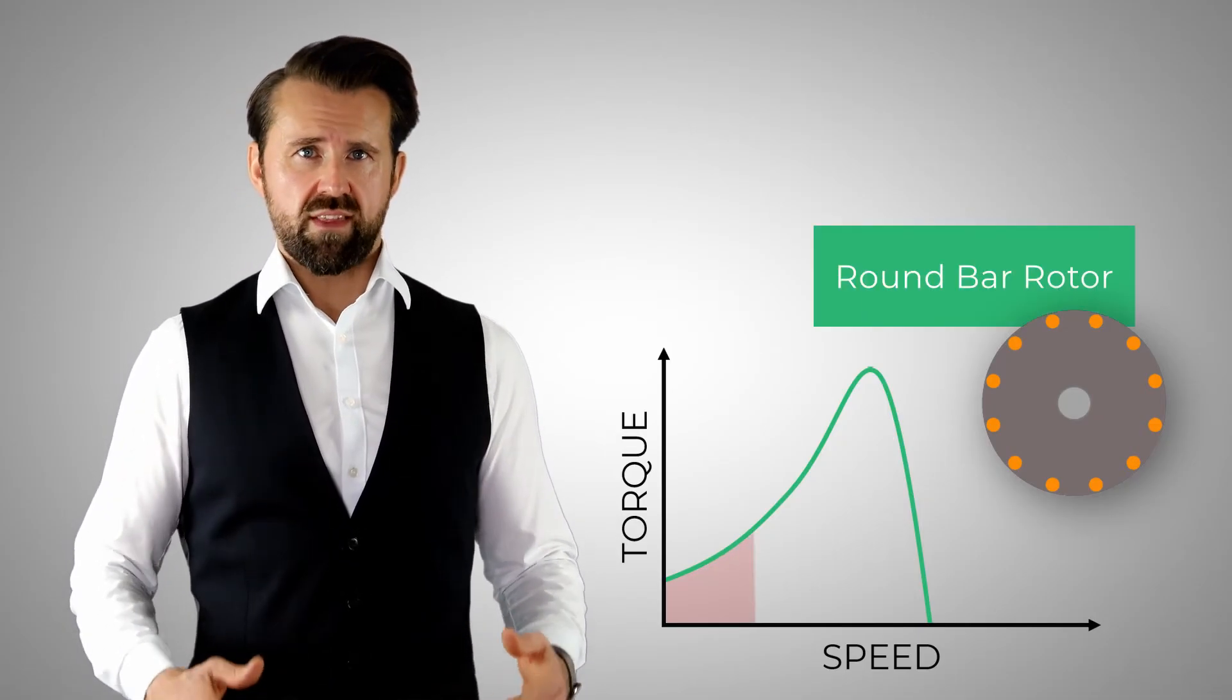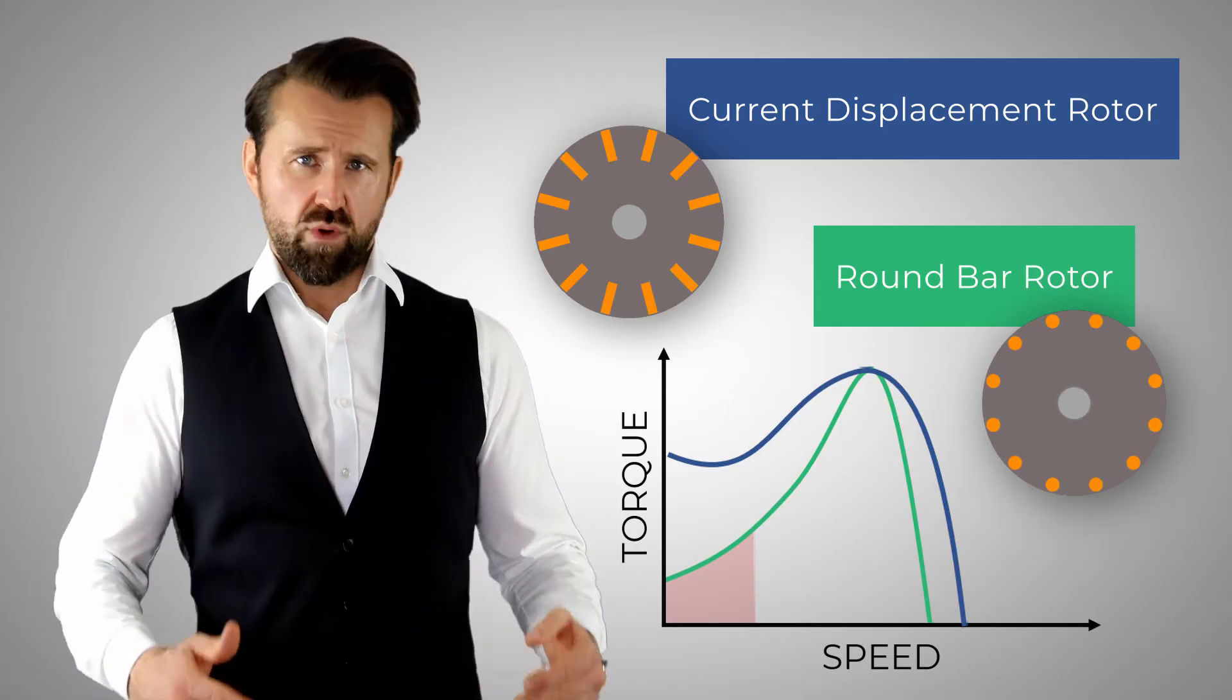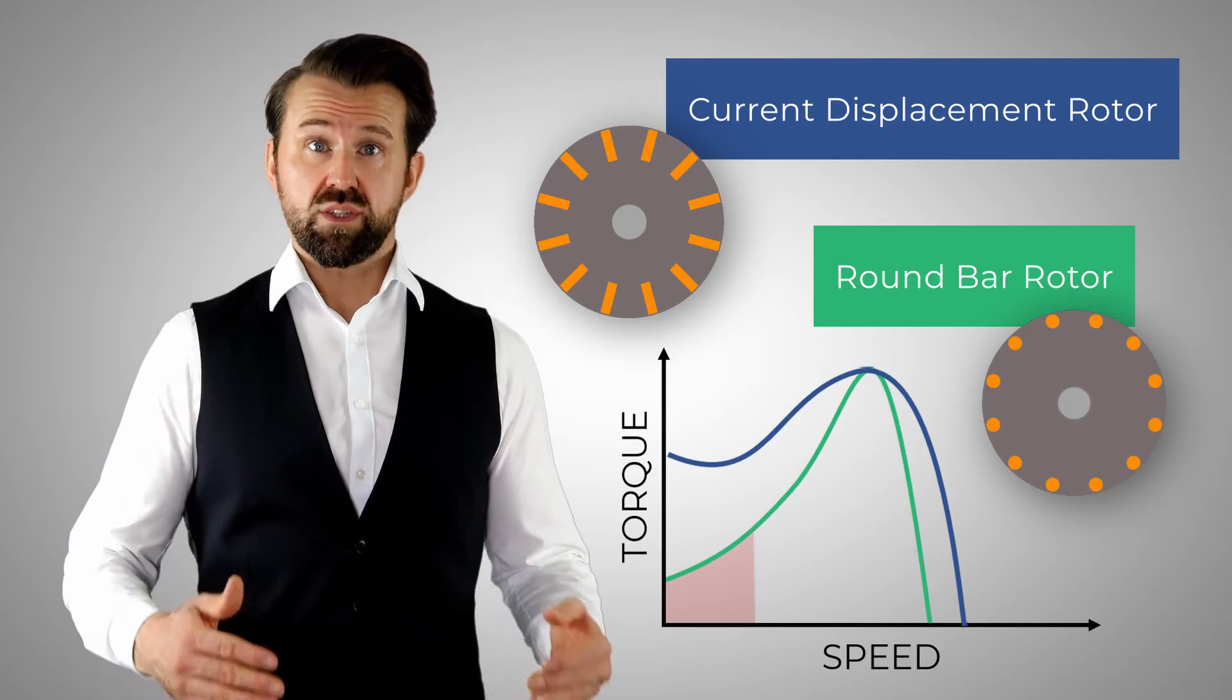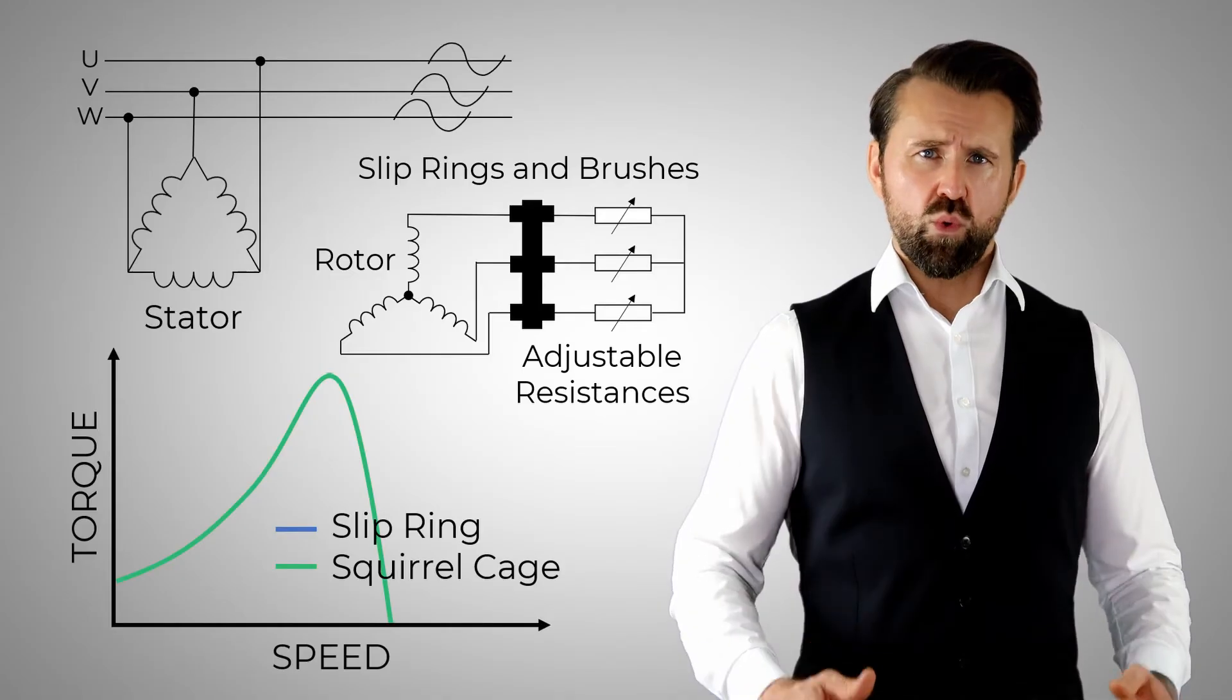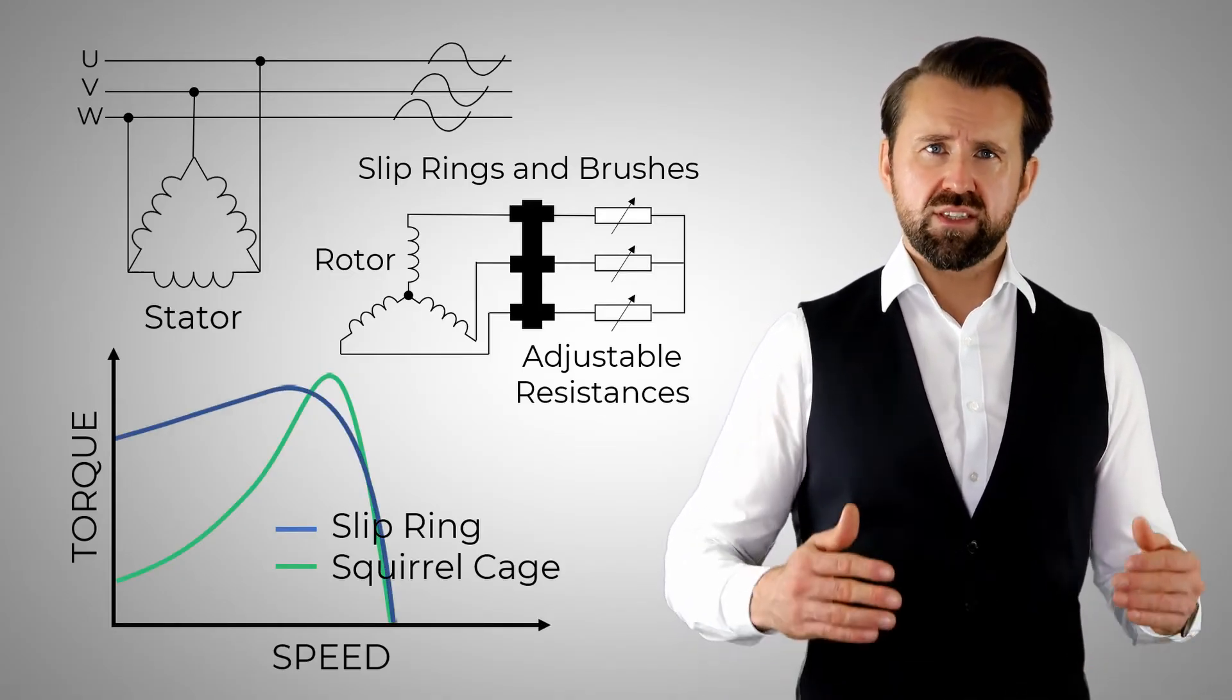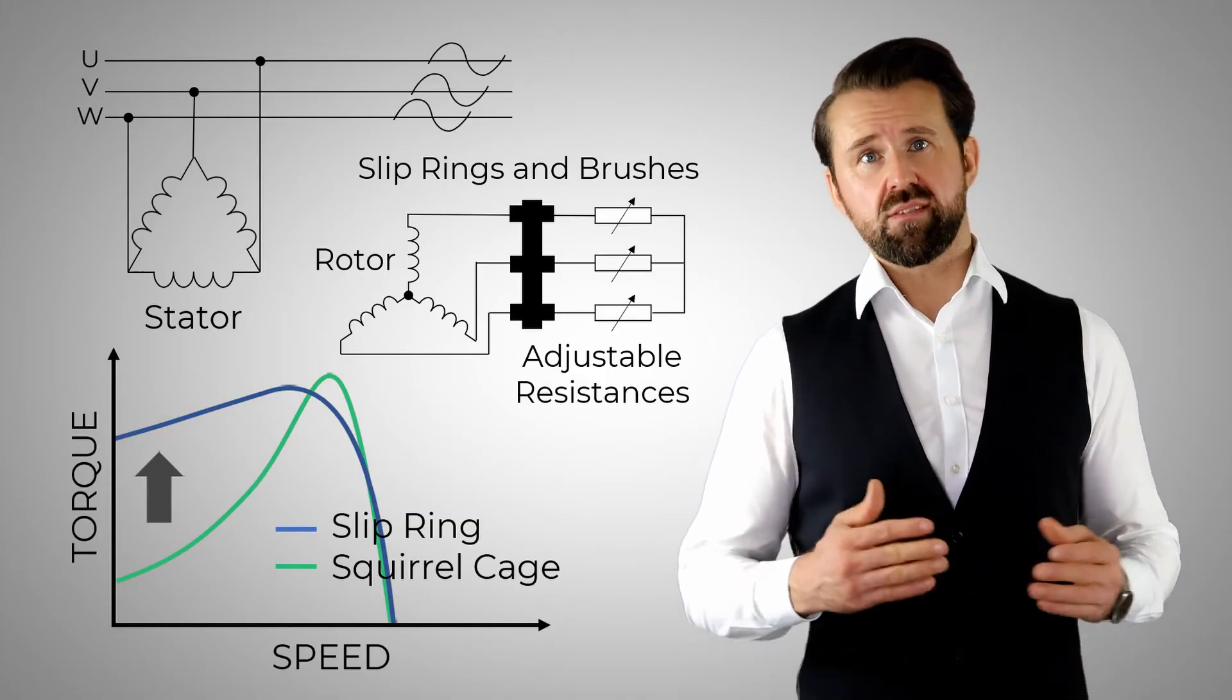To increase the torque in the lower speed range, a current displacement rotor can be used. For example, rectangular bars are used instead of round bars. This increases the resistance of the rotor in the lower speed range and therefore also the torque. Another way to increase the torque in the lower speed range is to use a slip ring rotor. With a slip ring rotor, the resistance is changed by externally variable resistors. In the lower speed range, the resistance is increased externally, thereby increasing the torque.